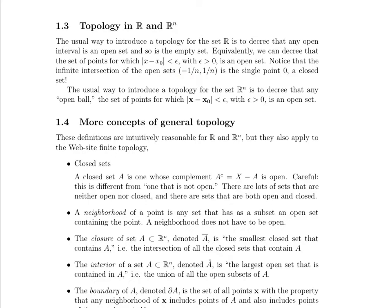The usual way to introduce a topology for the set R^n is to decree that any open ball, now we go from an interval to an open ball as we move from R to R^n, which an open ball is a set of points, the set of points is any point X that's within epsilon of X_0, where the distance between the two is less than epsilon, and epsilon greater than zero, obviously. That's your definition of open set in R^n.